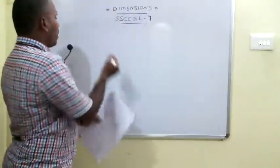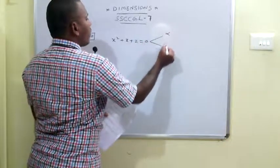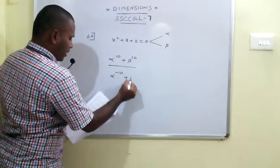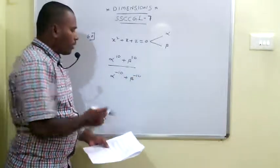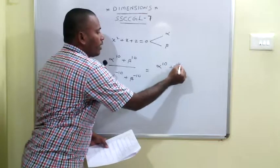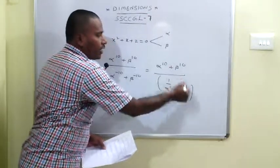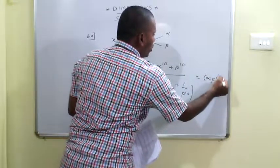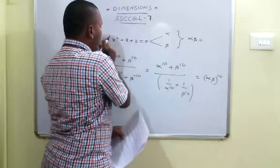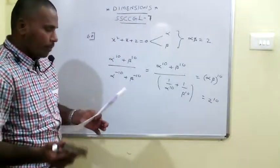The 60th problem: For the equation x² + x + 2 = 0 with roots alpha and beta, we need to calculate (alpha¹⁰ + beta¹⁰) / (alpha⁻¹⁰ + beta⁻¹⁰). Alpha⁻¹⁰ = 1/alpha¹⁰ and beta⁻¹⁰ = 1/beta¹⁰. After simplification, the expression equals (alpha × beta)¹⁰. The product of roots = constant / x² coefficient = 2/1 = 2. So the answer is 2¹⁰ = 1024.